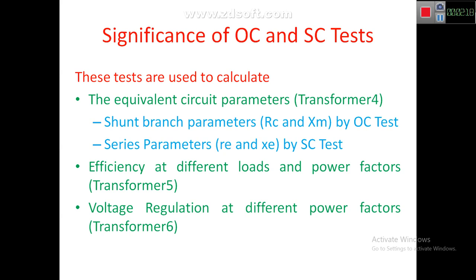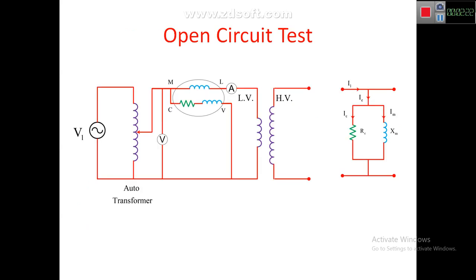We conduct the open circuit test on the LV side, meaning the HV side is open circuited and all instruments are connected to the LV side. In the circuit diagram, there is an AC voltage source, followed by an auto transformer to provide the necessary voltage, a voltmeter to measure the applied voltage, a wattmeter to measure power, and an ammeter.